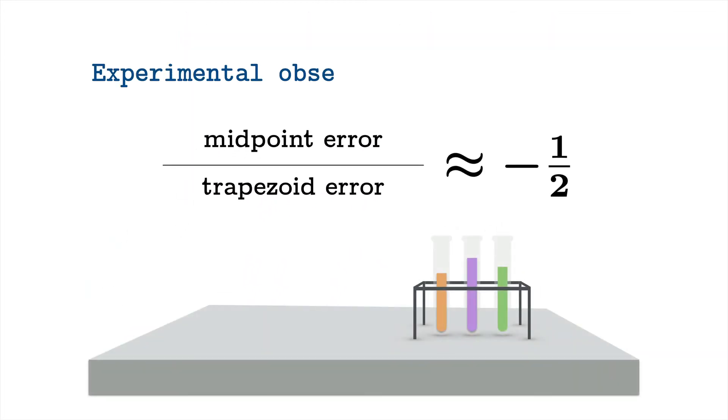So there's our experimental observation. If you take the ratio of the midpoint error to the trapezoid error, you roughly get about negative one-half.